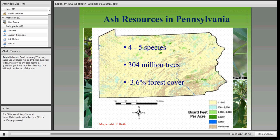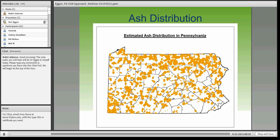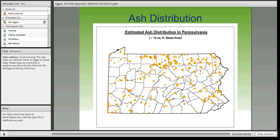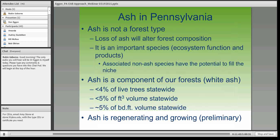If you look at the distribution of ash in Pennsylvania, it is scattered throughout our forests. But looking at areas greater than 10 square foot basal area, it shrinks down quite a bit, though some areas along the northern tier counties have very high quality ash. Louisville Slugger gets a lot of their ash for baseball bats from that northern tier in Pennsylvania. Ash in Pennsylvania is not really a forest type, but it's very important from an ecosystem standpoint — especially white ash, which is the seventh most abundant hardwood species.